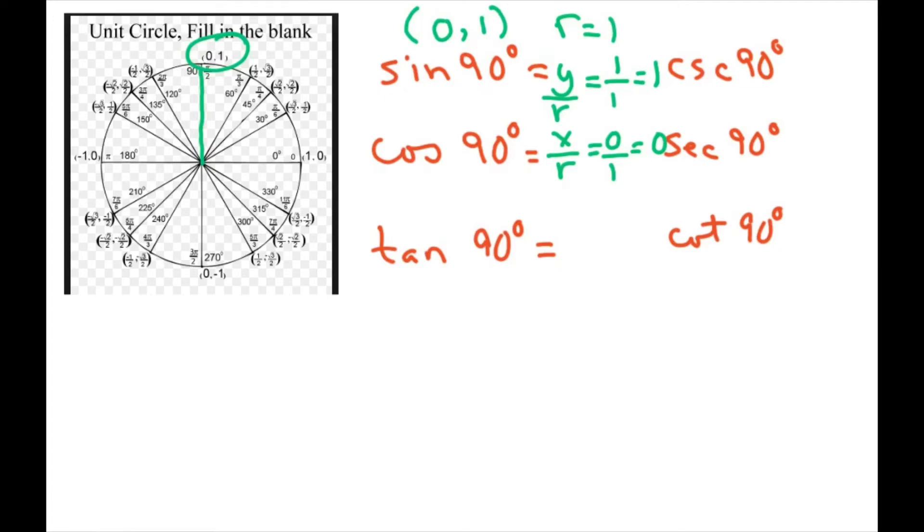And our tan is going to be y over x. So that's going to be 1 divided by 0, which is undefined. You can write empty set if you want, or you can just write undefined. Some people just put u. All right, and then on these, you just do the reciprocal. So it's 1 over 1 is still 1. 1 over 0 is undefined. And 0 over 1 is 0.